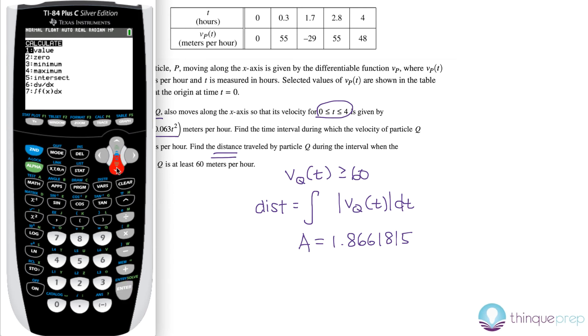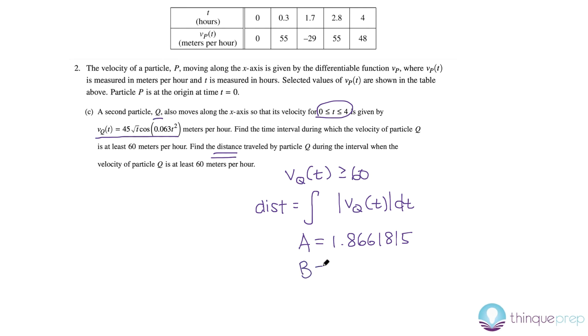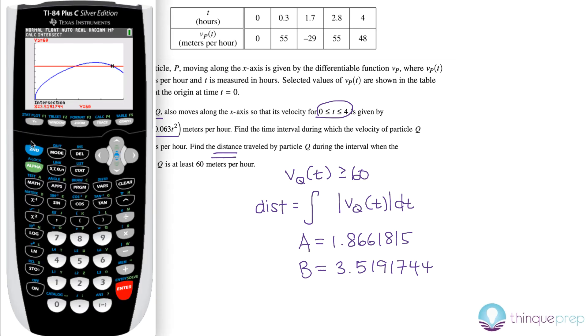And then let's do the point of intersection again for the second point. Scroll over. Close enough. 1, 2, 3. The intersection is 3.5191744. I copied that exactly.